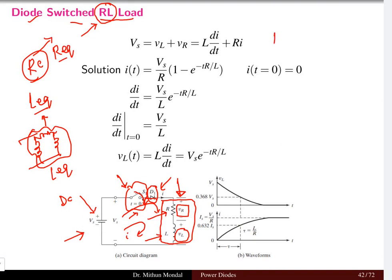Now the KVL equation that we can write in the loop involving the R and the L is given by the source voltage Vs equals VL plus VR. We know that algebraic sum of all the voltages will be equal to zero in a closed loop. Here we have the voltage equation that is written for the inductor, that is L di by dt, and for the resistor in accordance with Ohm's law it is I into R.